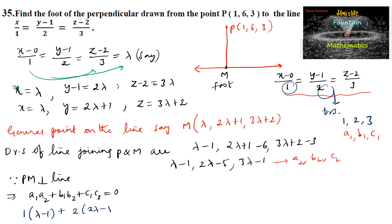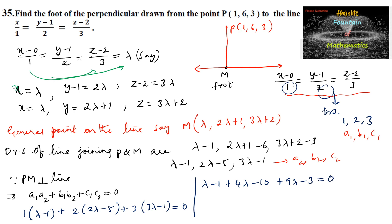So we write: 1·(λ−1) + 2·(2λ−5) + 3·(3λ−1) = 0. On simplifying: λ − 1 + 4λ − 10 + 9λ − 3 = 0, that is 14λ − 14 = 0, which gives λ = 1.